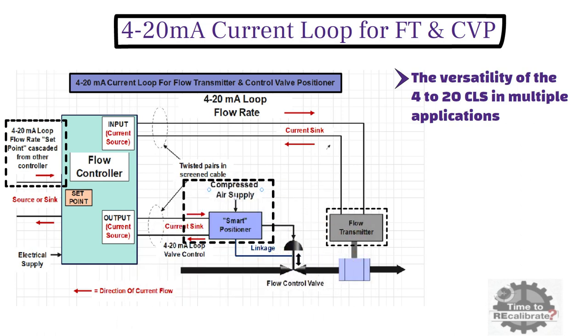In each loop, there has to be one source of current, usually the controller. In this example, flow controller receives the 4 to 20 mA signal from flow transmitter. And flow controller also receives setpoint from other controller. Flow controller compares transmitter signal with setpoint and gives the signal to control valve.